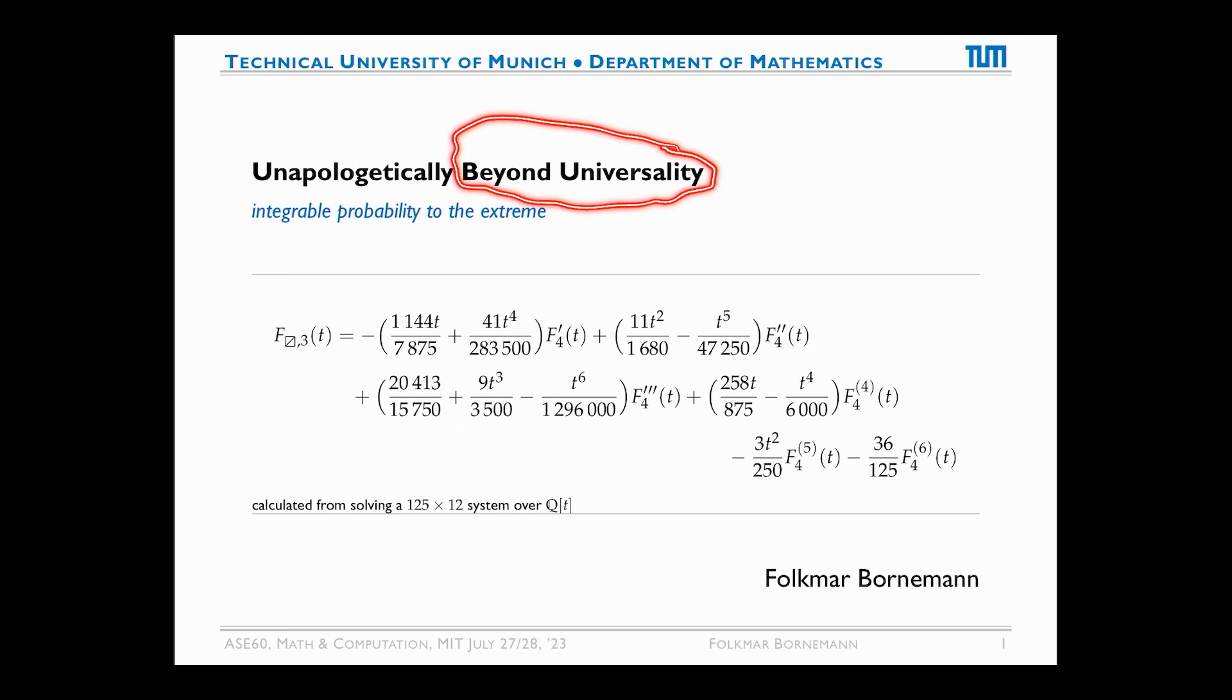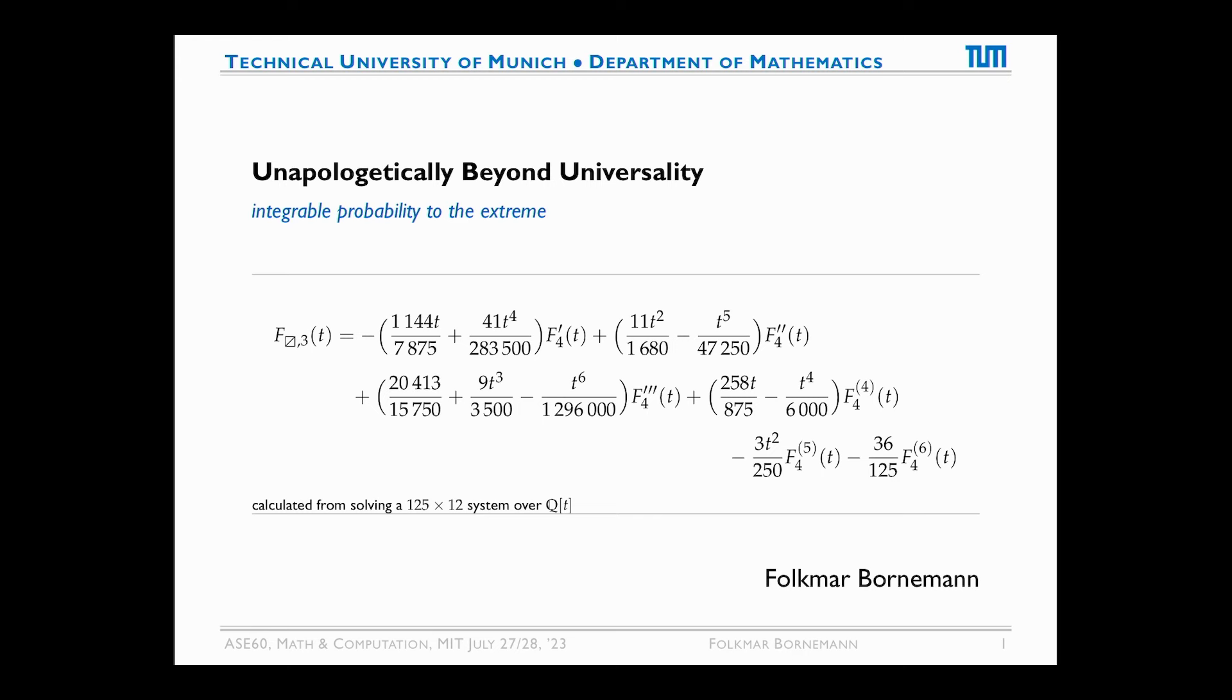So I stole a little bit the title from one of your papers, Beyond Universality. It was about, I think, six years ago a paper which you wrote with Alice and Sandrine. And so I will put it a little bit to the extreme. Since a lot of people are here doing linear algebra, numerical linear algebra or linear algebra in whatever fashion, let me show you this formula here of an expansion coefficient in a certain probability distribution. And those polynomials here, the factors, polynomial factors, were obtained by solving an overdetermined 125 by 12 system over the ring of rational polynomials. And I will point a little bit into that mystery in a while.